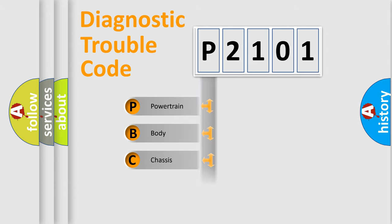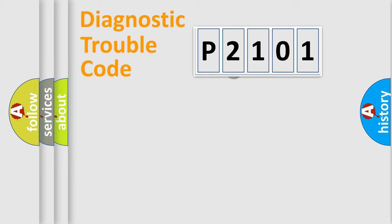Powertrain, body, chassis, network. This distribution is defined in the first character code.